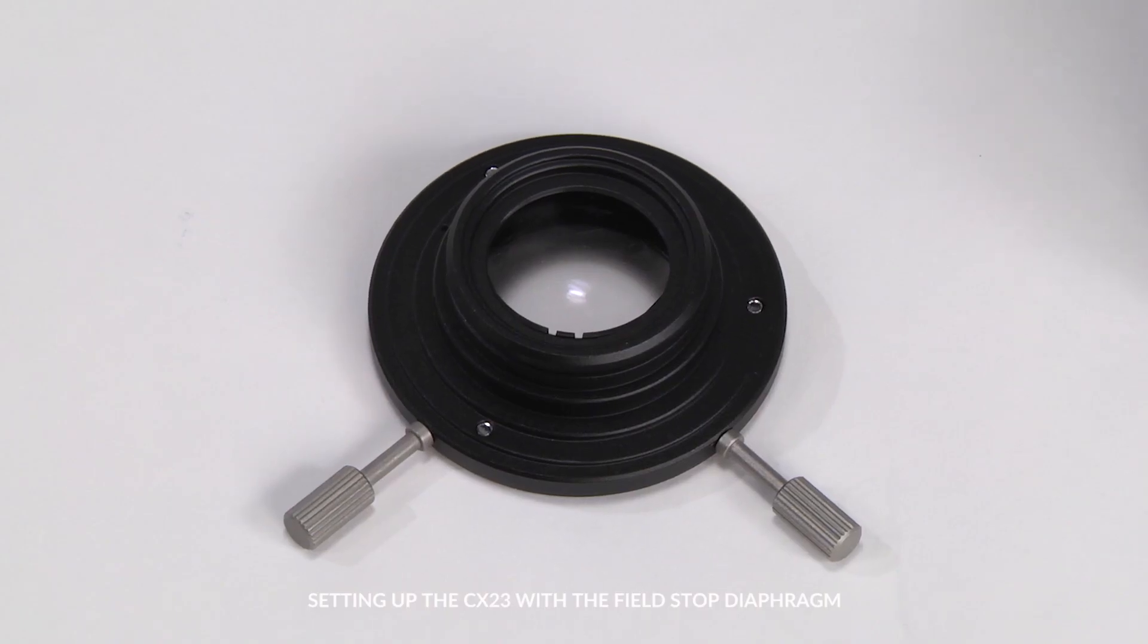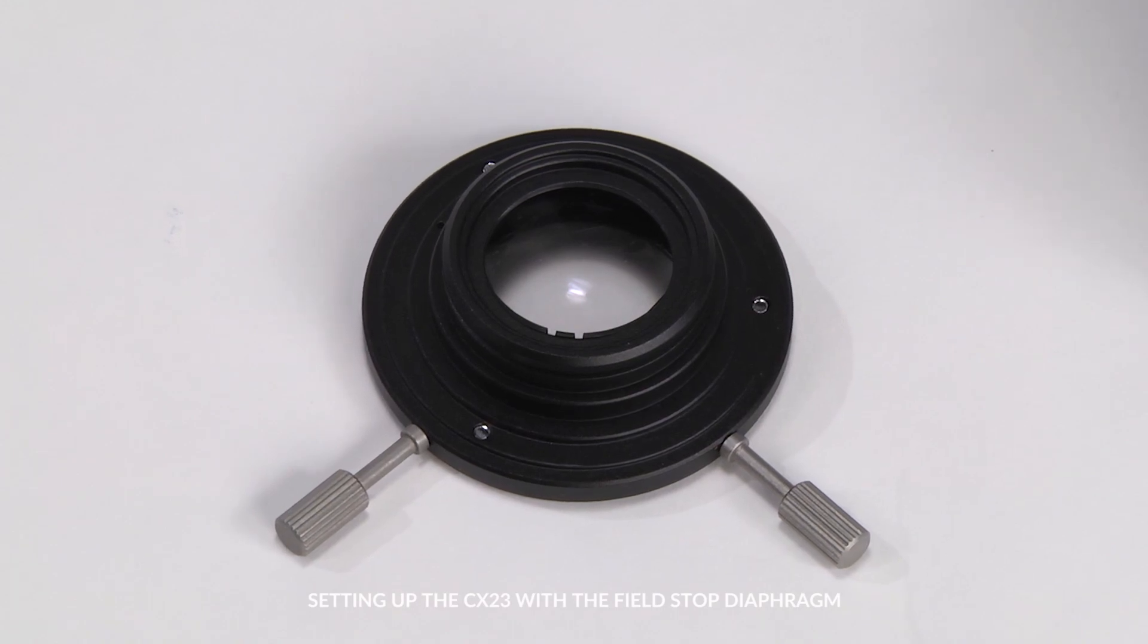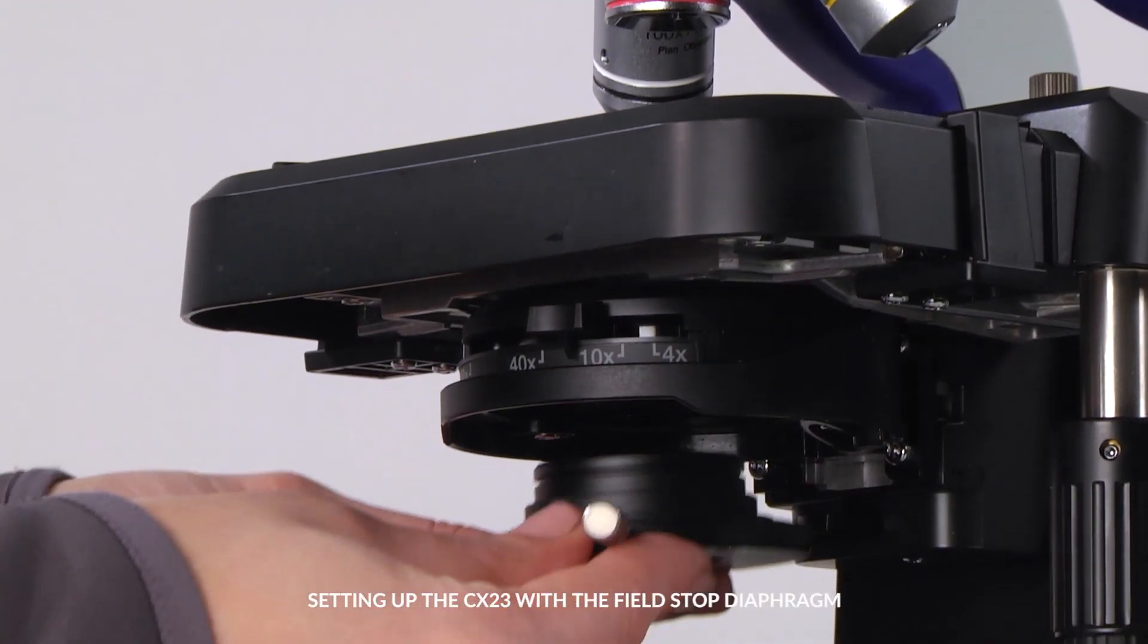Install the auxiliary lens unit onto your CX-23 microscope by placing it under the condenser and pushing it up until it clicks.